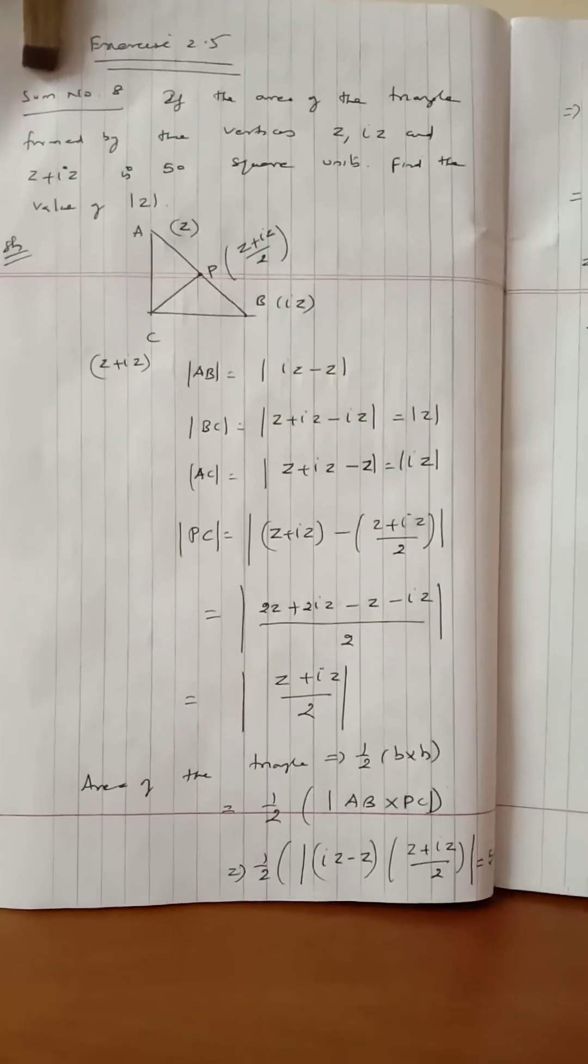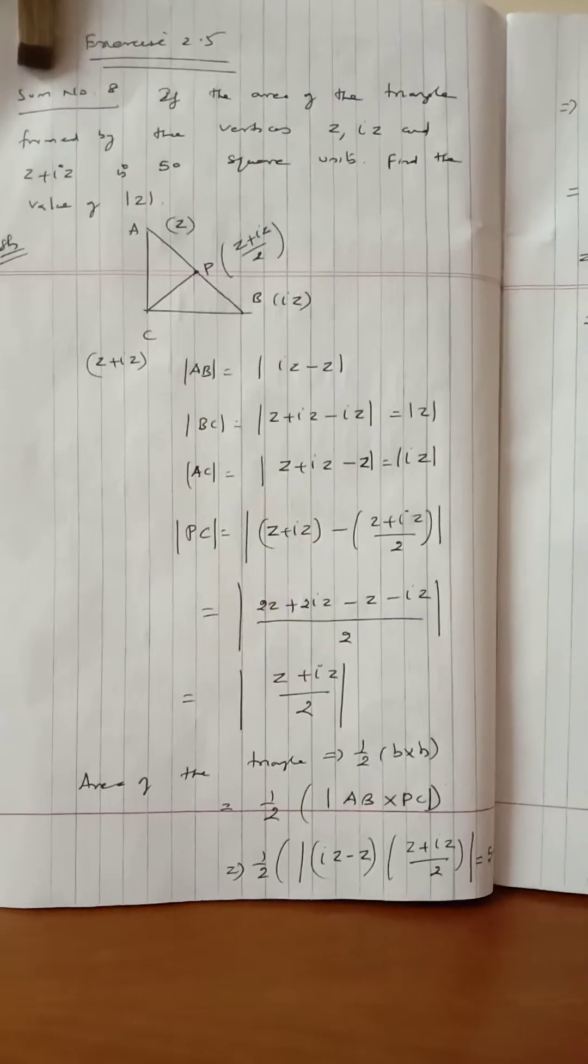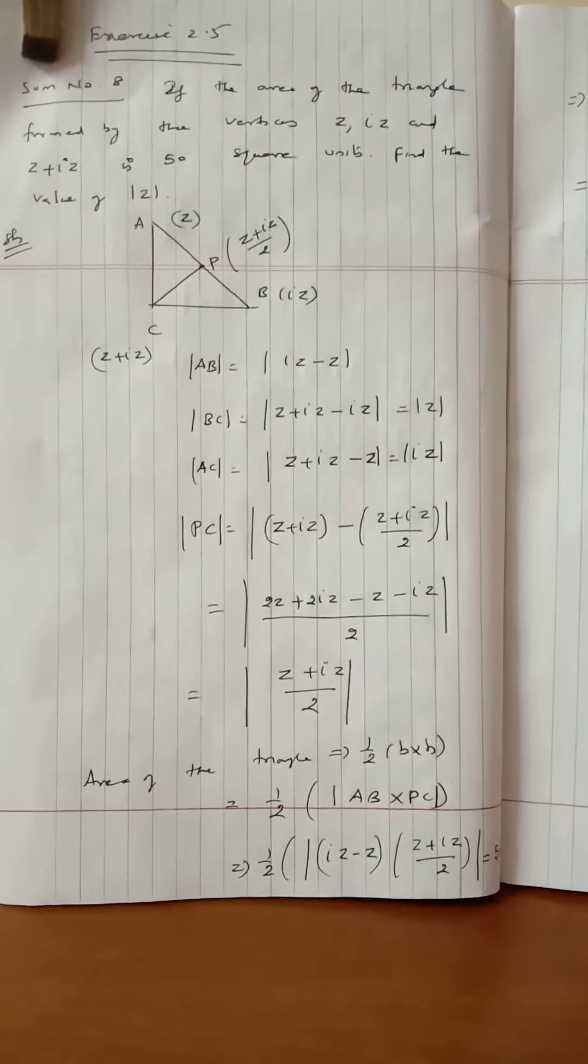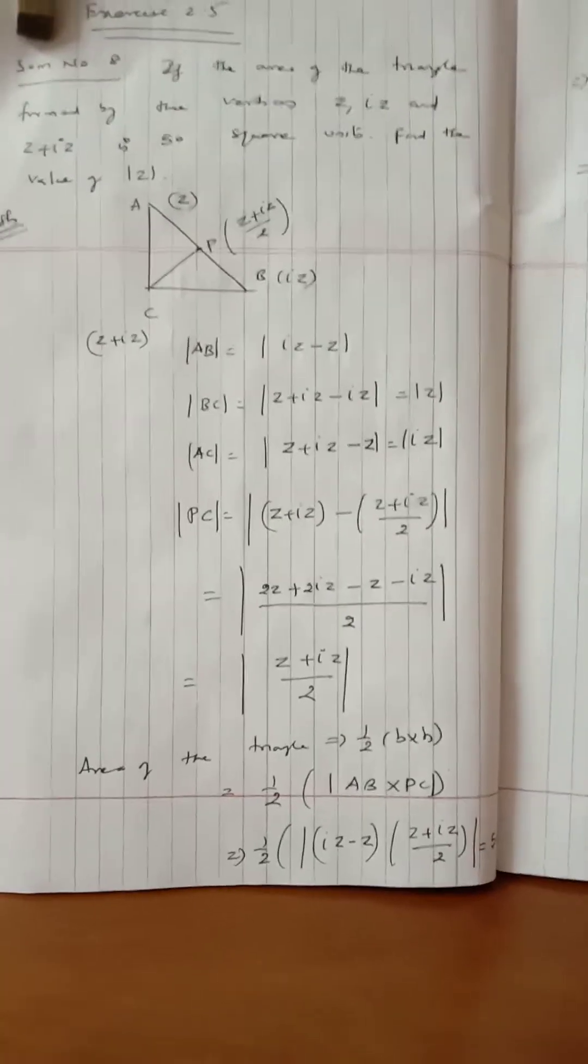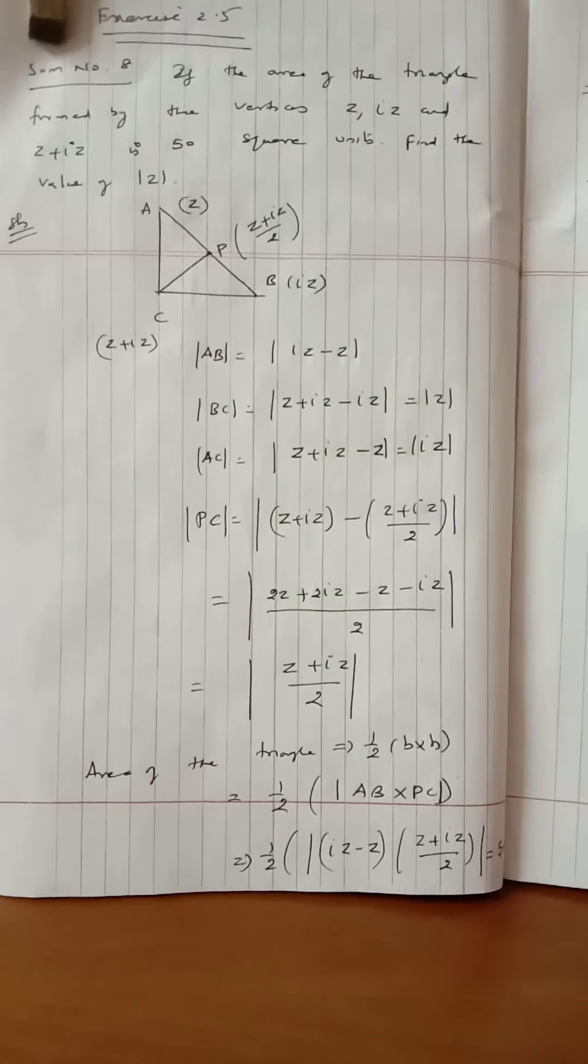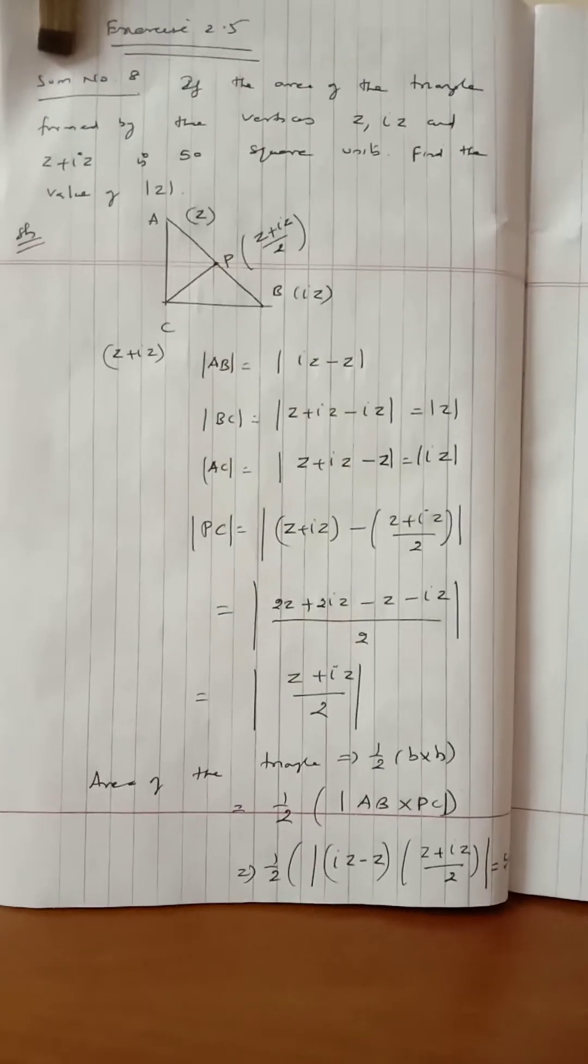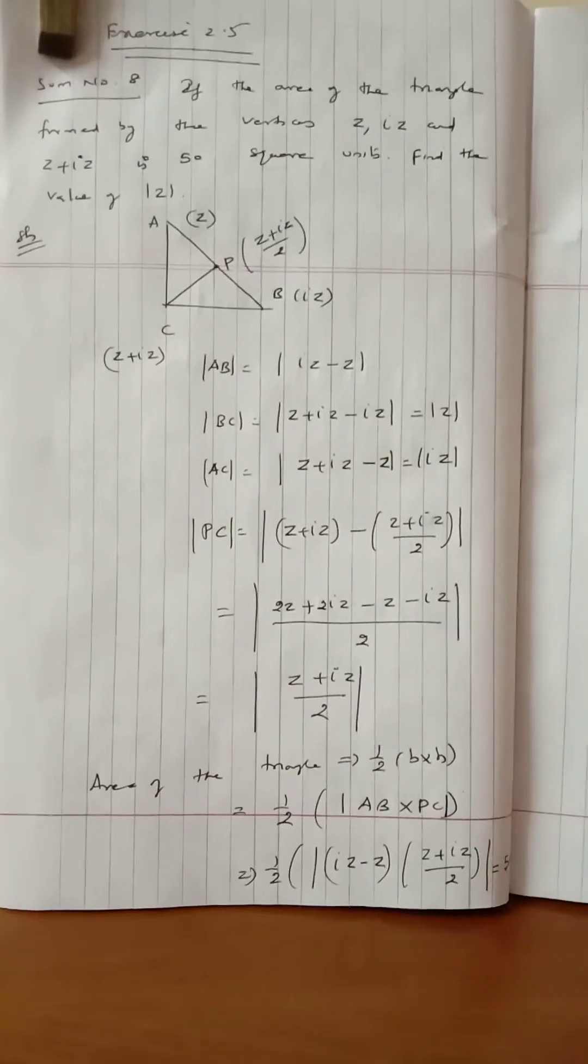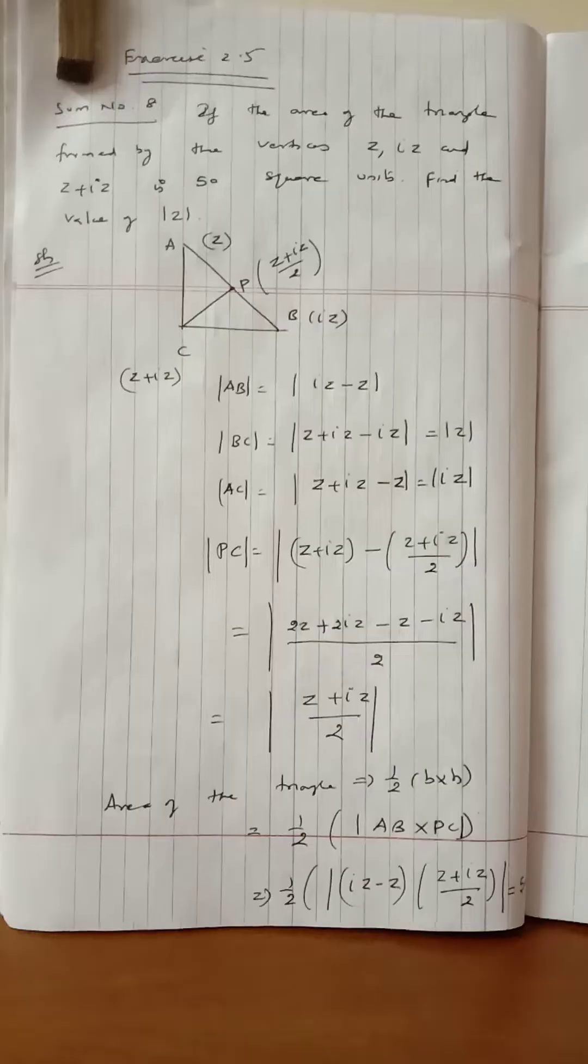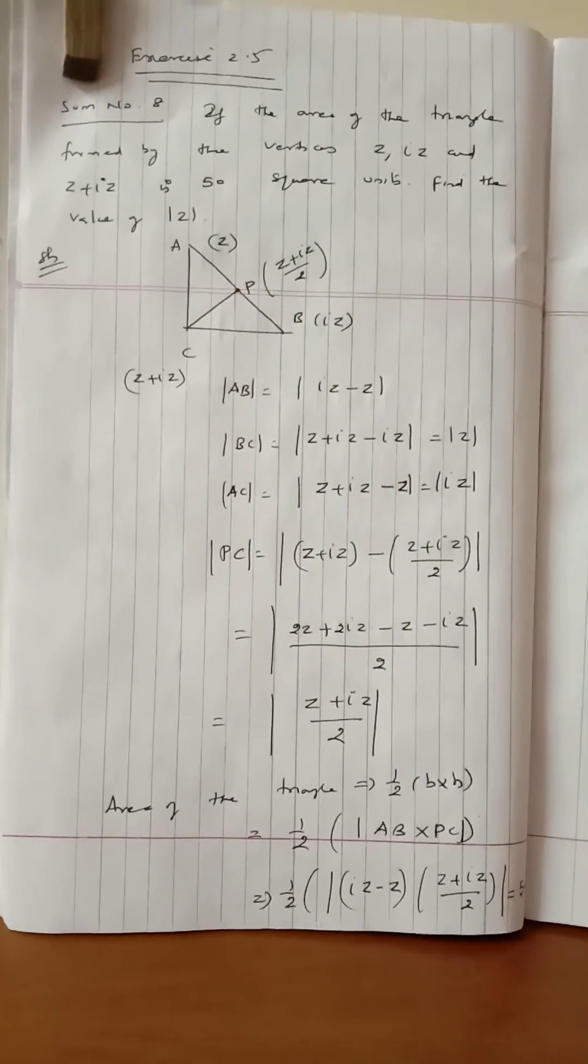Sum number 8: If the area of the triangle formed by the vertices z, iz, and z plus iz is 50 square units, find the value of modulus of z. This is the area of the triangle formula. We have to calculate the value of modulus of z.